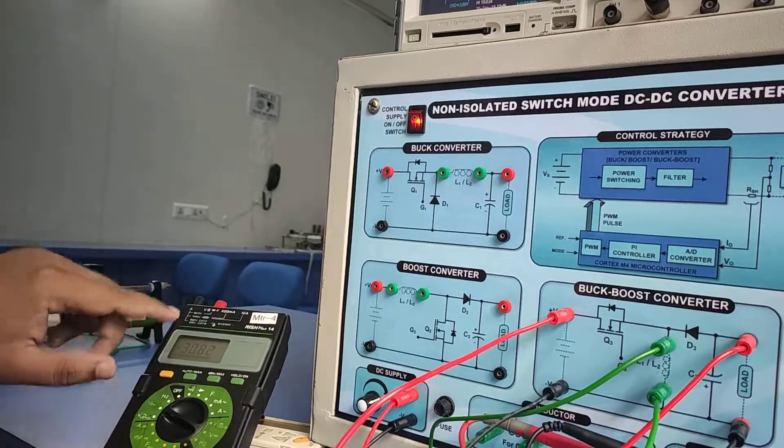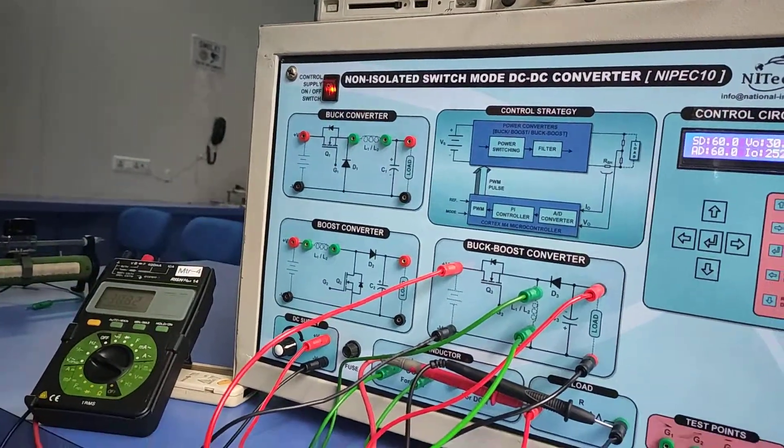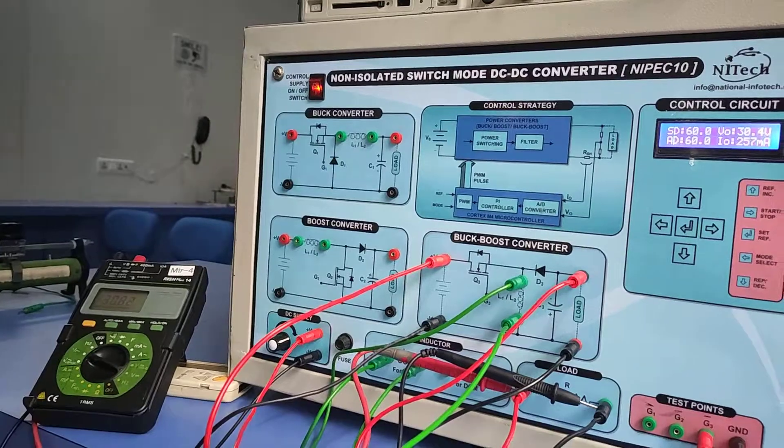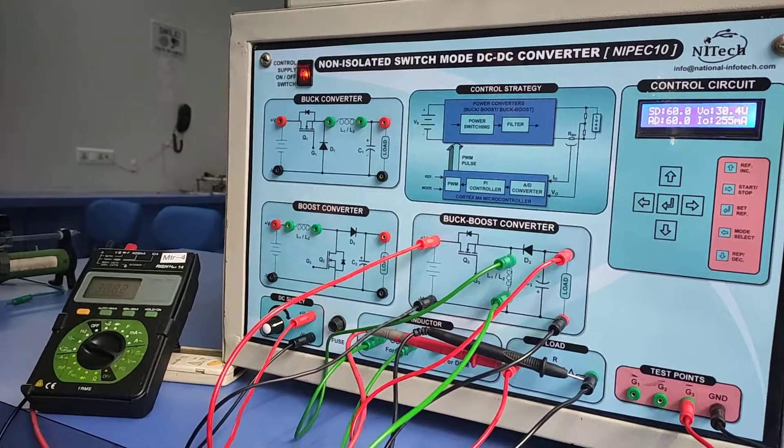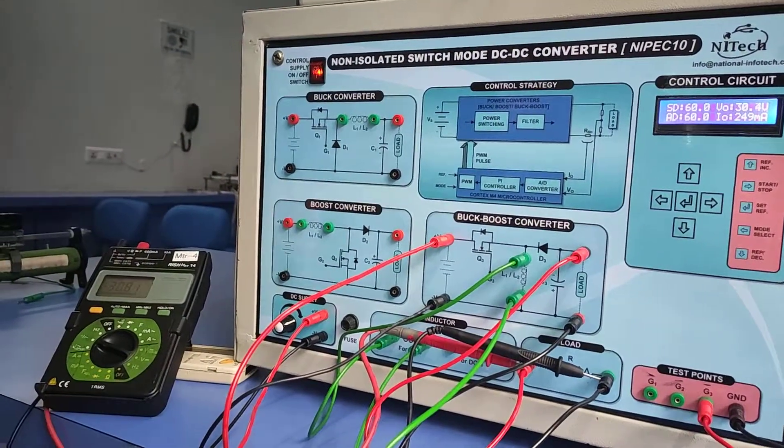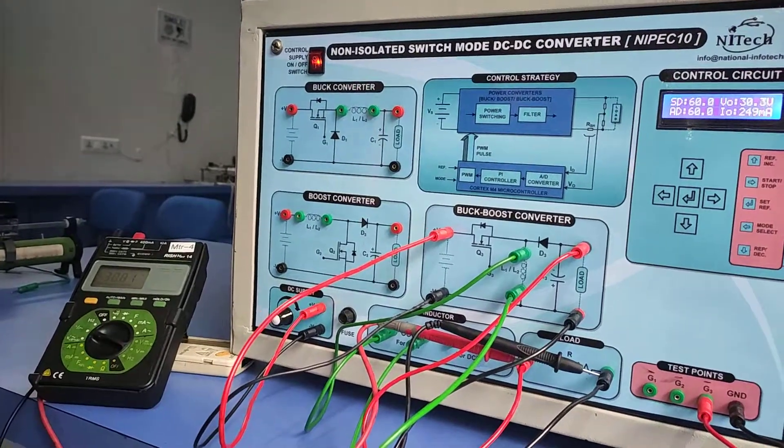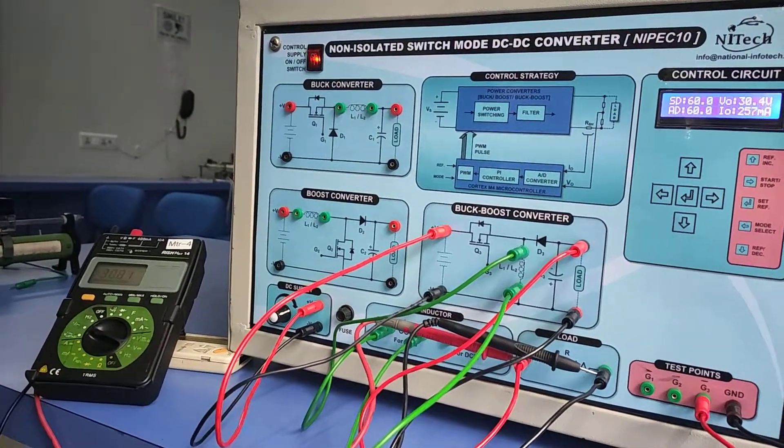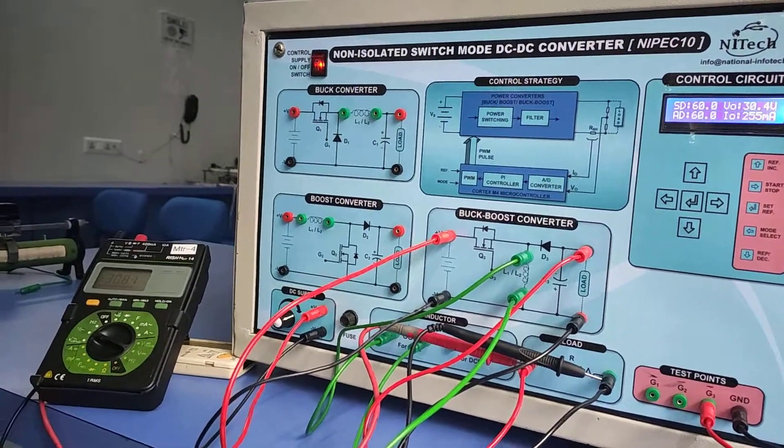You can operate the buck-boost converter from the range of 10 to 60 percent duty ratio. Above 50 percent it works as a boost converter. This is open loop mode operation in the buck-boost converter.